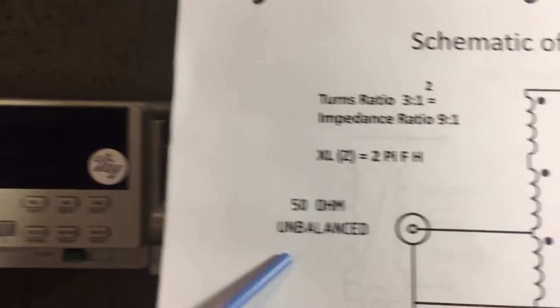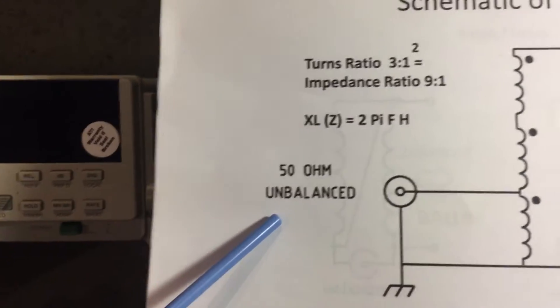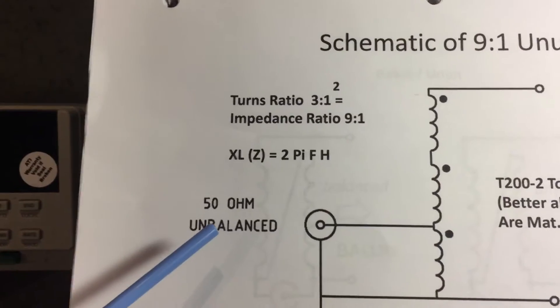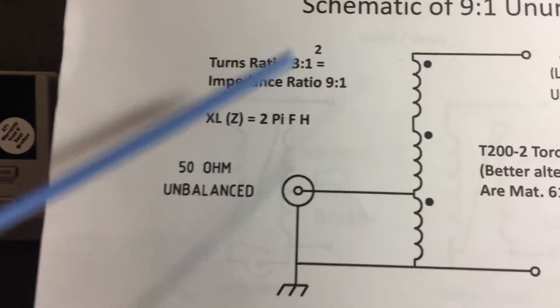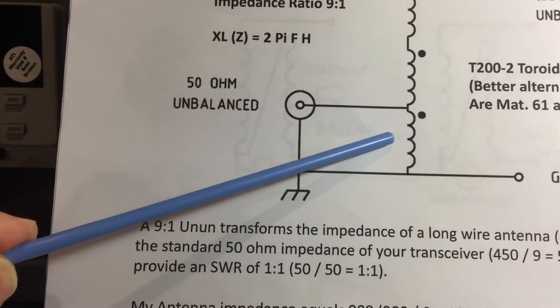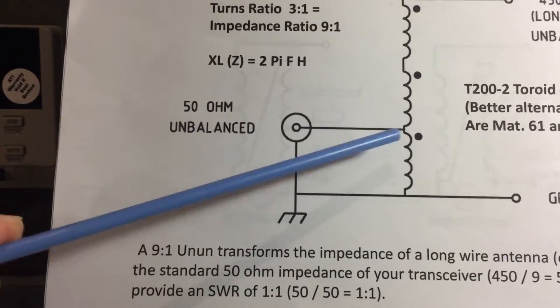It transforms to 50 ohms which is the standard impedance that we use for our ham radio transceivers. So it does the impedance transformation. You can see the turns ratio that there's three turns, so it's three and then one being shared, so it's three to one.